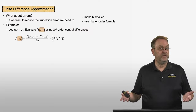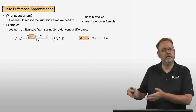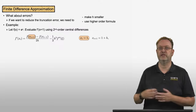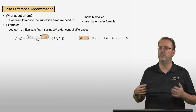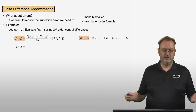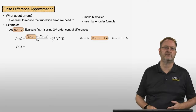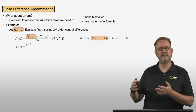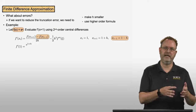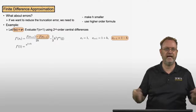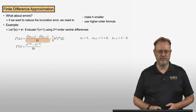I want to evaluate this at x = 1, so x_i is equal to 1. That means the neighboring point x_i+1 is a distance h away, so it is 1 + h, and the point x_i-1 is a distance h away in the negative direction, so it is 1 − h. So f prime at 1 equals e^(1+h) minus e^(1−h), divided by 2h.